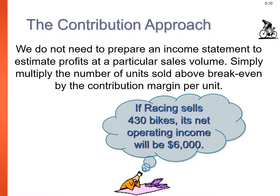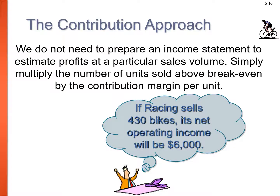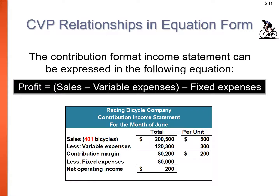For example, if we sell 430 bikes and break-even is 400, those 30 additional bikes times the $200 contribution margin gives $6,000 of profit. We can express this as an equation: profit equals sales minus variable expenses minus fixed expenses, which is the contribution income statement in formula form.